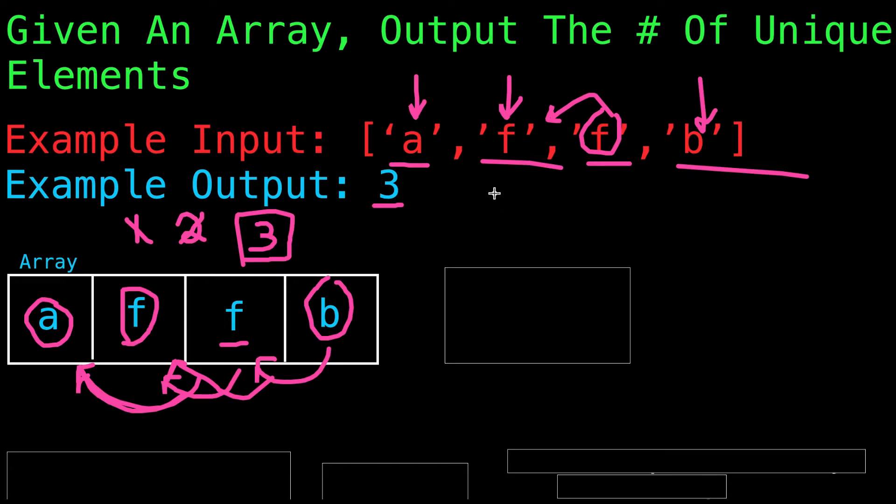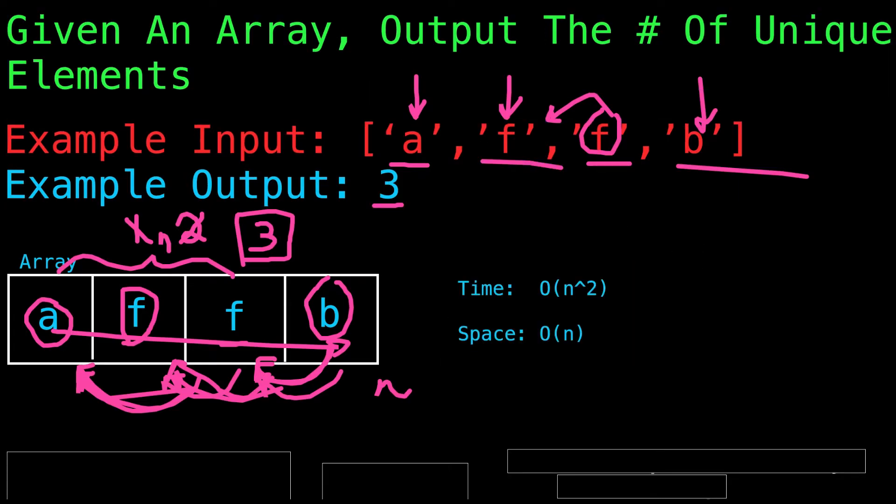While this seems like a good approach, the space complexity would be N because our array is filled with N elements. However, every single element causes us to check the previous elements. So we're going through N elements and checking, at worst case scenario, another N elements for every element, which means our time complexity is actually going to end up being N squared.